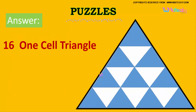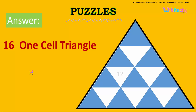Let's see — 16 one-cell triangles: 1, 2, 3, 4, 5, 6, 7, 8, 9, 10, 11, 12, 13, 14, 15, and 16. It's 16 one-cell triangles.